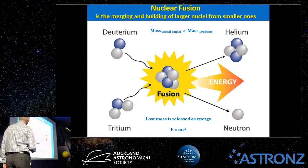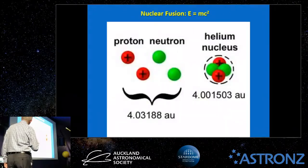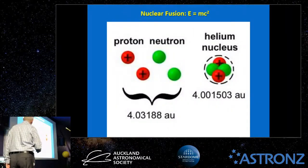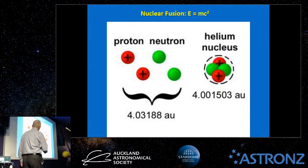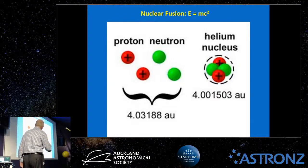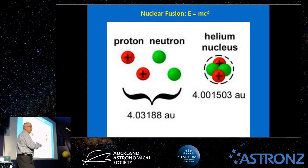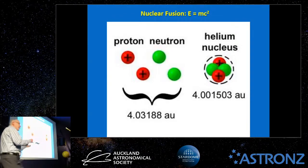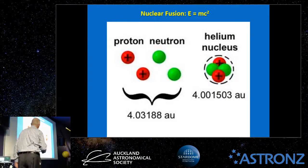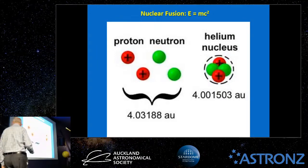Here's a concrete illustration: two protons and two neutrons have a combined atomic mass of 4.03188 atomic units, but when you bring them together the measured mass is only 4.001503 atomic units — a significant difference. That lost mass is called binding energy; it's released as you bring these things together, and you can calculate it with Einstein's formula.